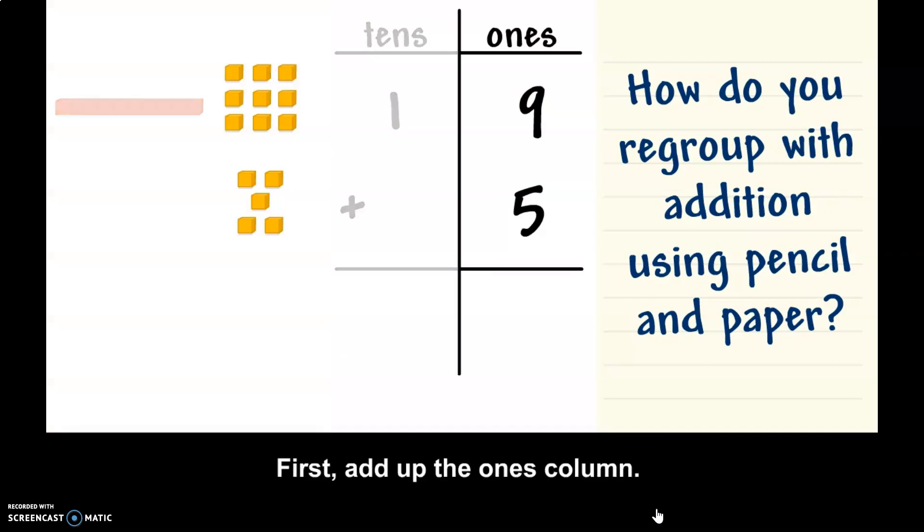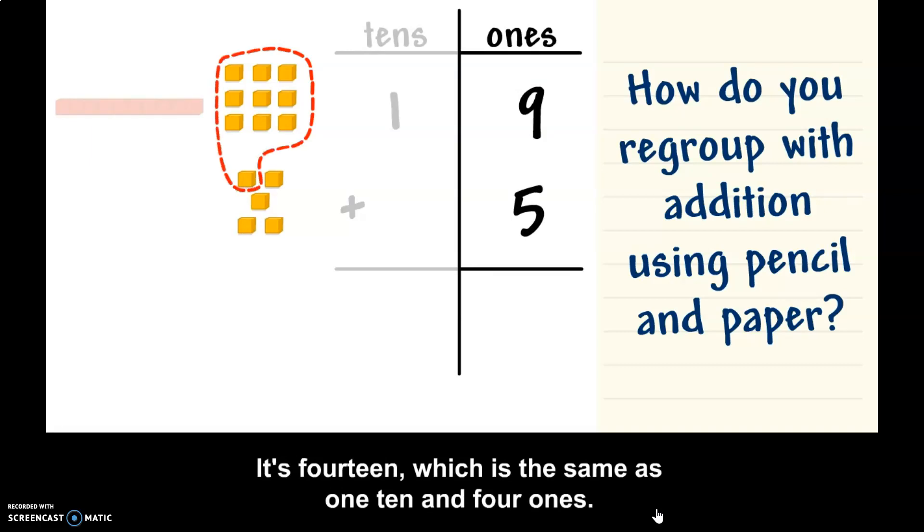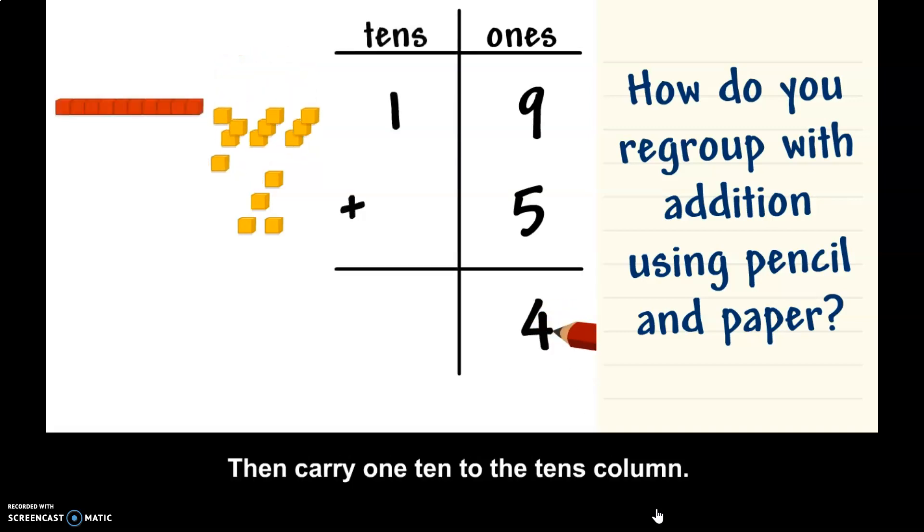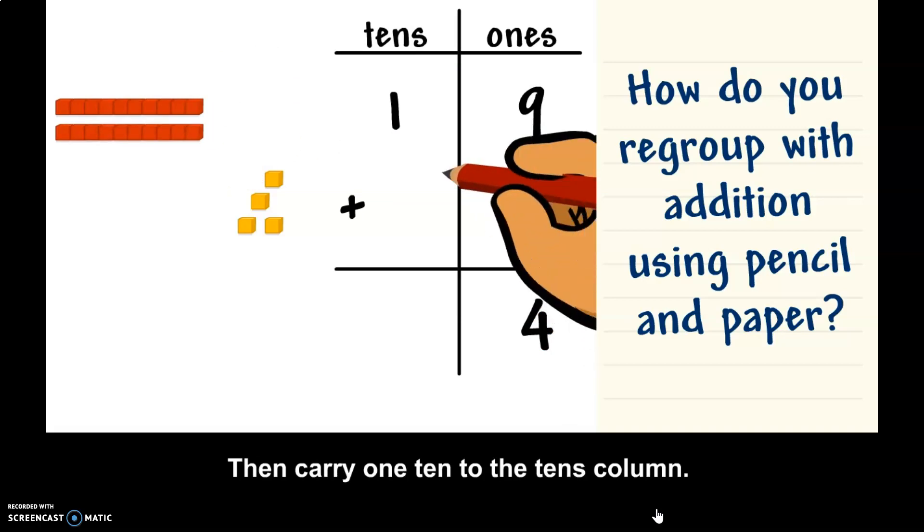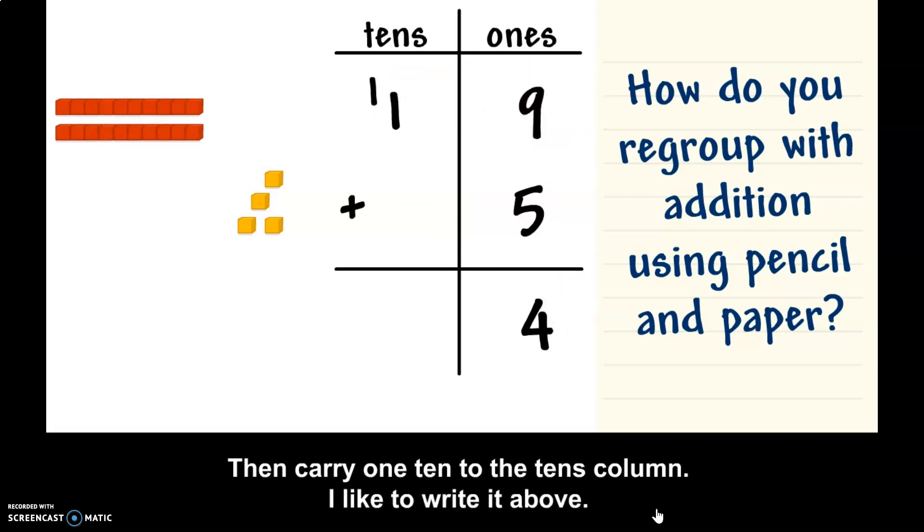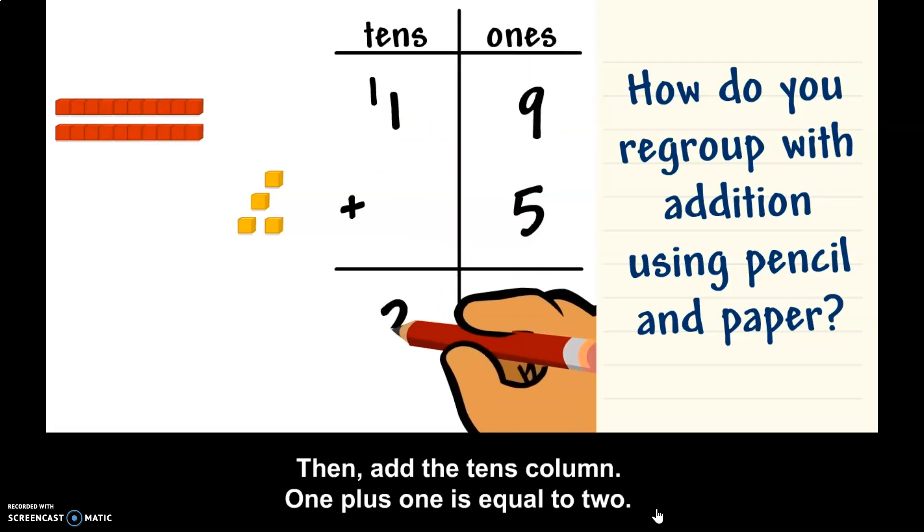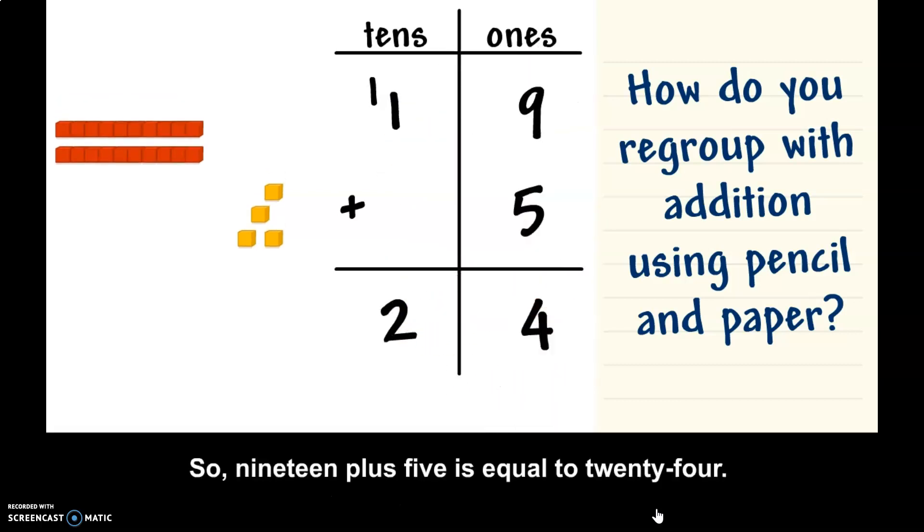First, add up the ones column. What is 9 plus 5? It's 14, which is the same as one ten and four ones. So, put the four in the ones column. Then carry one ten to the tens column. I like to write it above. Then add the tens column. One plus one is equal to two. So, 19 plus 5 is equal to 24.